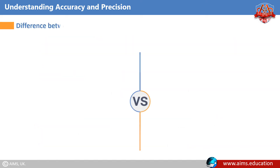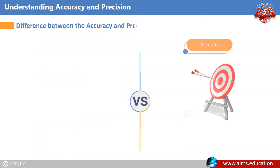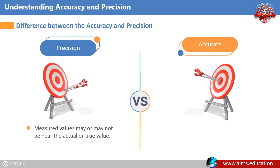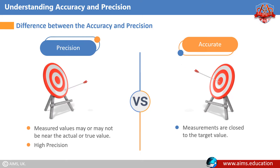The difference between Accuracy and Precision: Measured values may or may not be near the actual or true value, but if the scatter is lesser, the measurements are said to have high precision. When measurements are close to the target value, they are accurate — scatter does not have any significant role here.